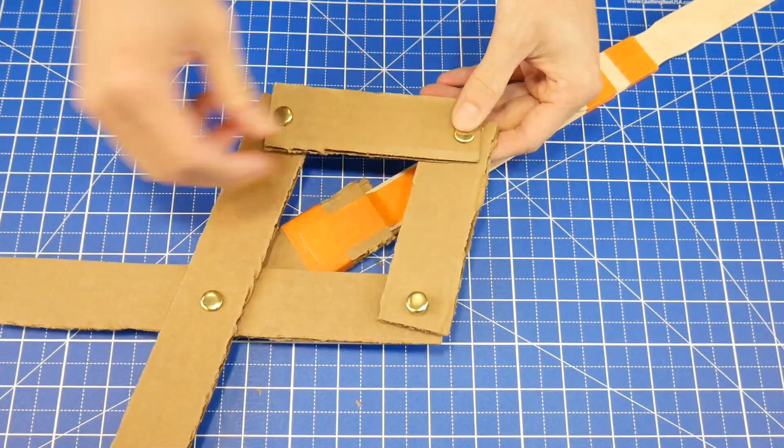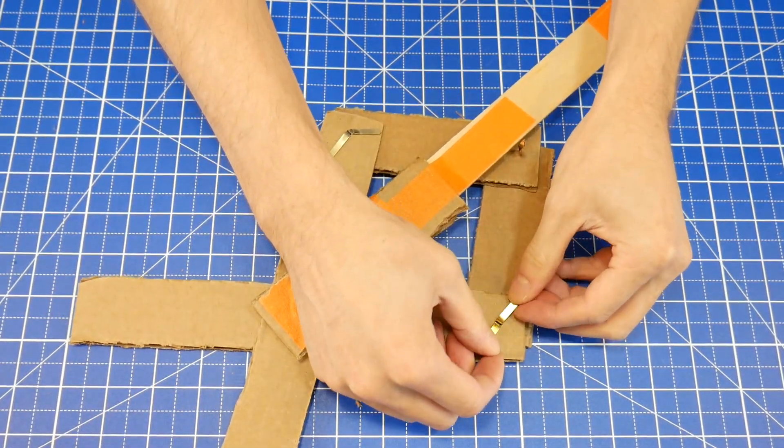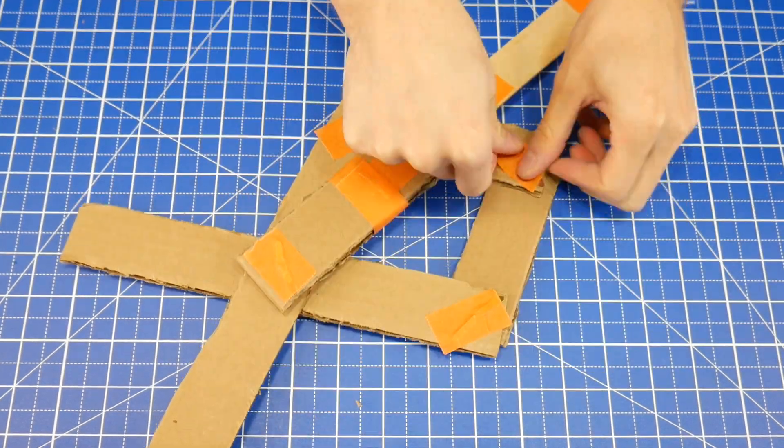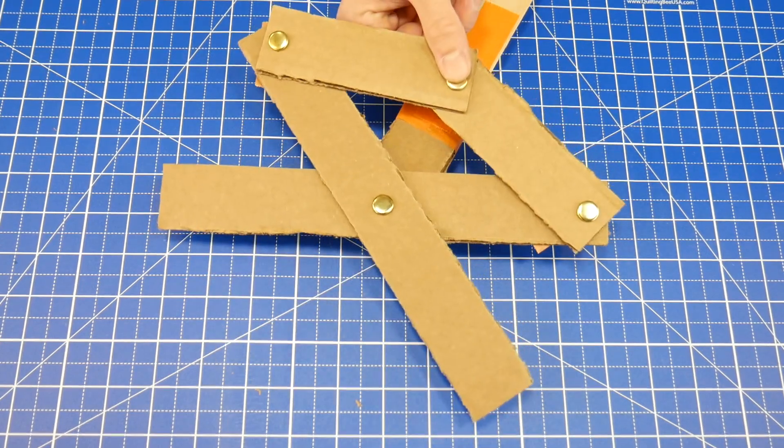Flip it over, fold the fastener tabs down, and tape them. Okay, all of the grabber linkage is complete.